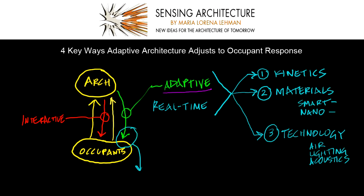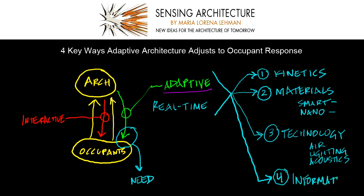The fourth way that adaptive architecture can adjust to occupant response is through information. Information conveyed through an adaptive architecture can help to educate occupants and share with them latest events or news going on within the building, for example.